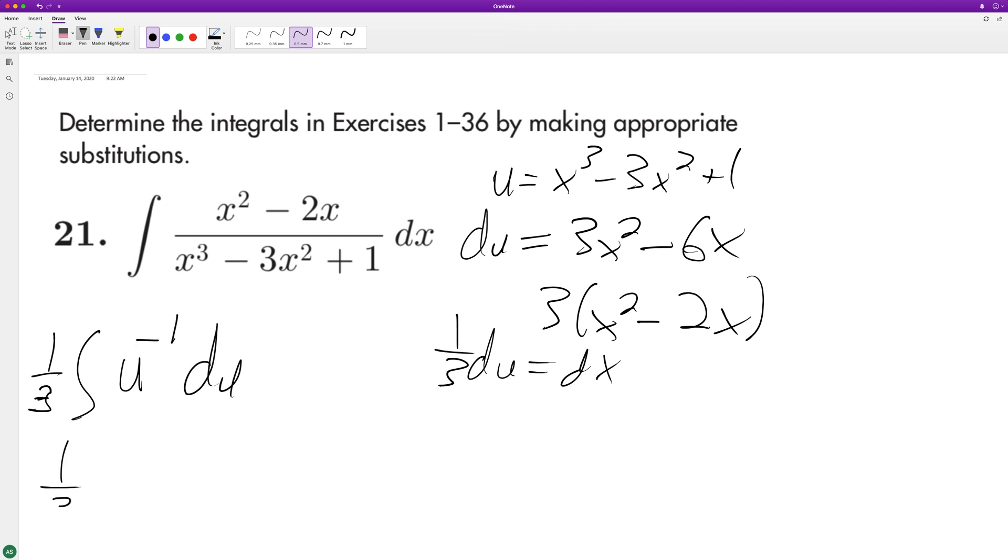So when we integrate this, we get 1 third natural log absolute value of u plus c. And when we substitute back in, we end up with 1 third natural log of x cubed minus 3x squared plus 1 plus c.